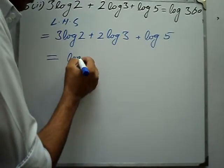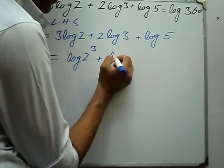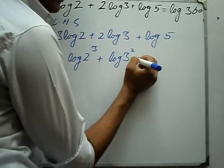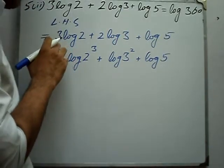3 log 2 becomes log 2 to the power 3, plus log 3 to the power 2, plus log 5. First we apply the property where the coefficient becomes the exponent.